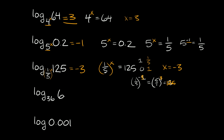Here we have log base 36 of 6. So 36 raised to what power is equal to 6? One thing you might notice is that the square root of 36 equals 6. A square root is the same thing as the 1 half power. So 36 raised to the 1 half power equals the square root of 36, which equals 6. So our exponent is 1 half, meaning log base 36 of 6 is equal to 1 half.